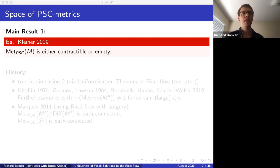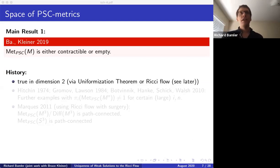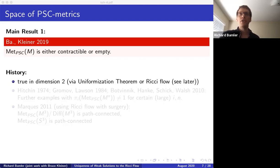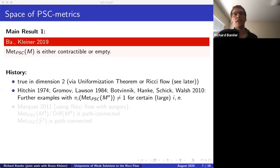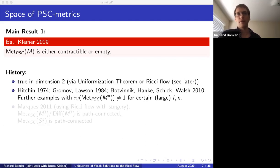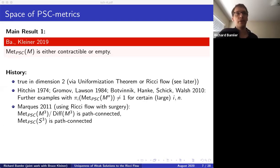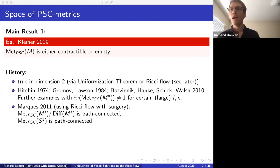To show why this problem is interesting: the corresponding result is true in dimension two, using the uniformization theorem. The first time this type of question became interesting was in a paper by Hitchin from 1974, followed by work by Gromov-Lawson and Botvinnik-Kankashvili-Walsh, who constructed obstructions showing the space is non-trivial in higher dimensions. In dimension three, the conjecture was always that the space is trivial. The first positive result was achieved by Marquez in 2011, who used Ricci flow with surgery to show the space is path connected.